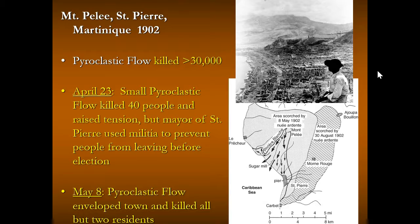But there was an election coming up, so the mayor of St. Pierre said there was nothing to worry about. In fact, the militia was used in some cases to prevent people from leaving. On May 8th, a pyroclastic flow enveloped the town and killed all but two residents, who reportedly survived because they were in a jail.